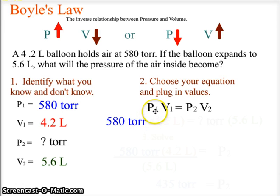Initial pressure times initial volume equals the final pressure times the final volume. Let's plug in our values. 580 torr is the initial pressure. The initial volume is 4.2 liters. The pressure final is what we are looking for, and we have a new volume or final volume of 5.6 liters.